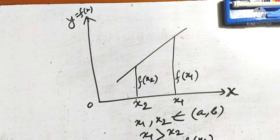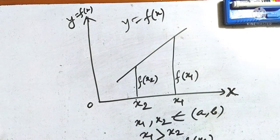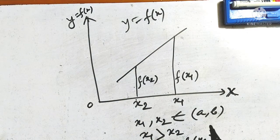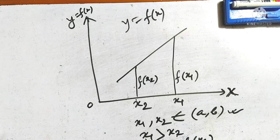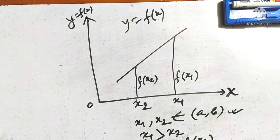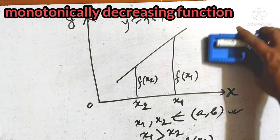If y equals to fx, the function is said to be monotonically decreasing if x1 and x2 belong to the closed interval a, b, and x1 is greater than x2, and fx1 becomes less than or equals to fx2, then the function is called monotonically decreasing.